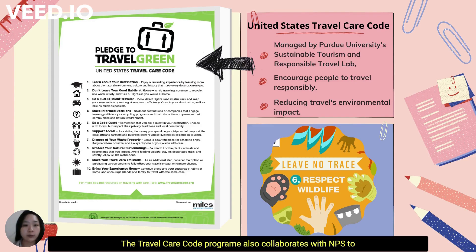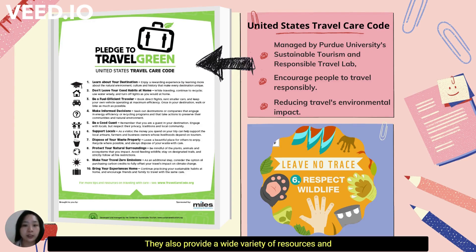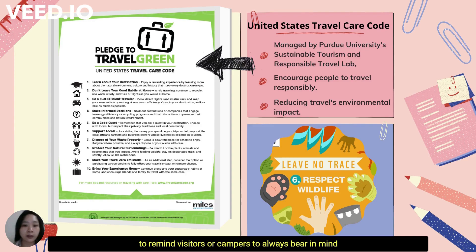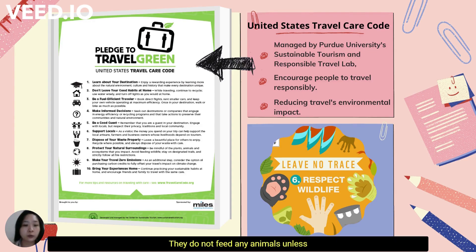The Travel Care Code program also collaborates with NPS to deliver the measures of responsible travel and good guest behavior. To support responsible travel, they also provide a wide variety of resources and tools to destination marketing groups and tour operators. In addition, the seven Leave No Trace principles are listed at every entrance of national parks as a framework of low-impact behavior, reminding visitors and campers to always bear in mind and adhere to these principles — for example, to respect any animals and wildlife they might encounter and to avoid picking flowers no matter how beautiful.